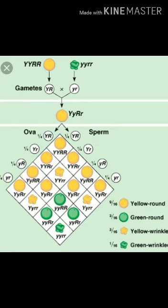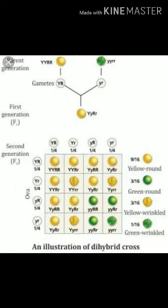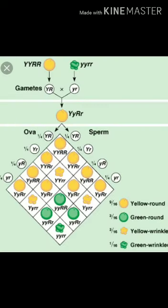Moving on to the cross — this experiment involves the inheritance of two pairs of contrasting characters and was conducted by Mendel. He took two varieties of seed: yellow color and round appearance (YYRR) and green color and wrinkled appearance (yyrr). Both belong to the pure parental generation. In the F1 generation, you will see in the diagram that the offspring have genotype YyRr — all of them are yellow round, as yellow round is the dominant character.